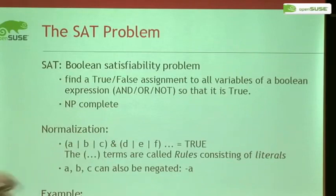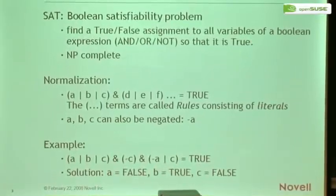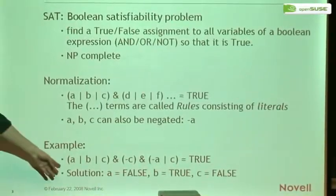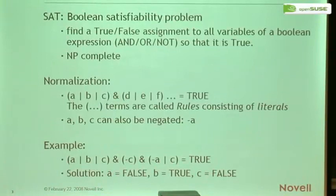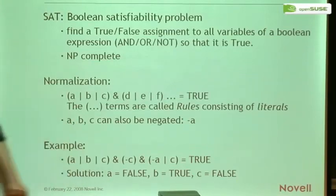Here's an example: you have (A or B or C) and (not C) and (not A or C) is true. The solution would be: set A to false, set B to true, set C to false. This is true because of B, this term is true because of the not-C, and the last term is true because of the not-A. Normally there are multiple solutions for a problem, but I'll come to that later.